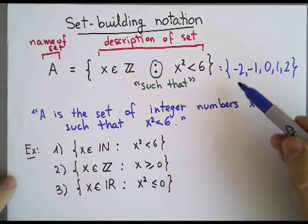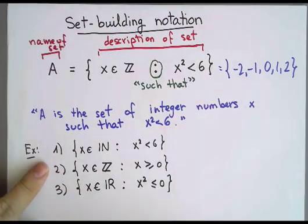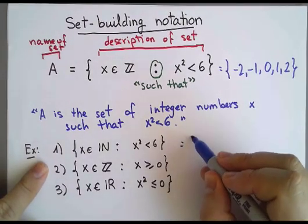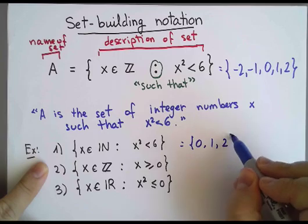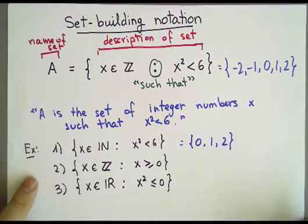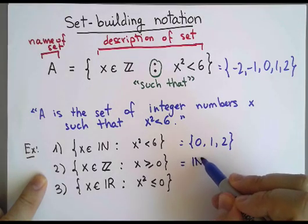Here are the answers. The first one is very similar, except I'm insisting the numbers have to be naturals. Therefore, I only get 0, 1, and 2. The second one is just another name to describe the natural numbers. So this is nothing more than that.